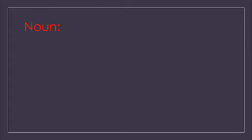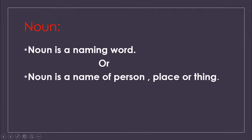Now come towards your topic, that is noun. Nowadays we are discussing about noun, and the definition of noun is: noun is a naming word. Naming word means the name of each and everything around you. Or there is another definition of noun: noun is a name of person, place or thing.